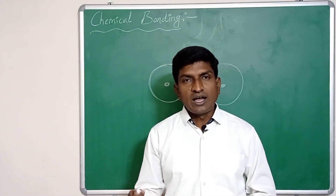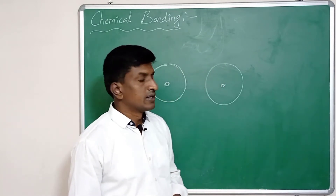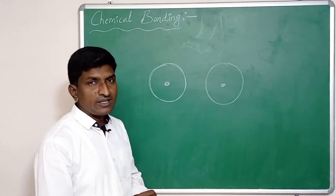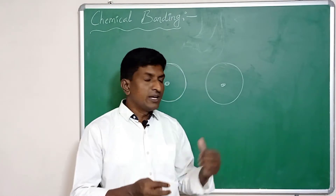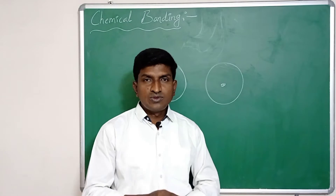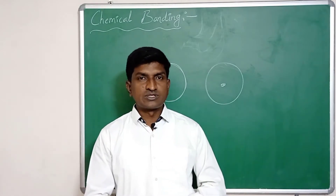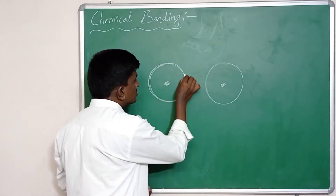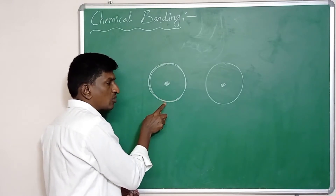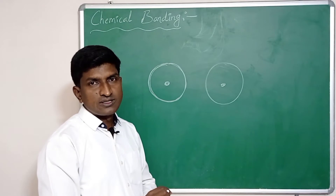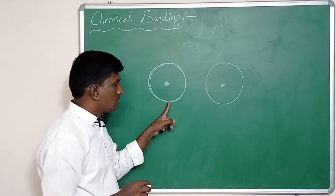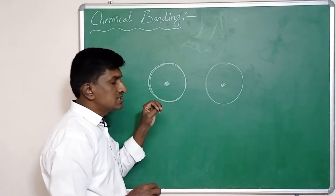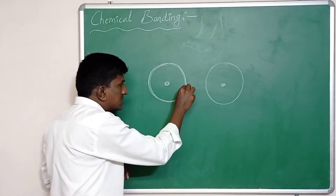Why are atoms combined together? When two atoms sufficiently come close to each other, two forces come into play between them: one is the attraction force and the second is the repulsive force. The attraction force is between the electrons present in the outermost orbits. These outermost orbit electrons are called valence electrons.